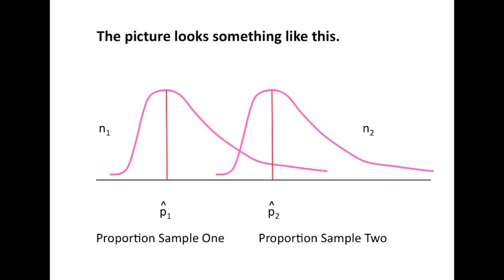Here's a picture of what this might look like. We have our first proportion and the probability of success in it. The second proportion and the probability of success in it. We have a number in our first sample and a number in our second sample. If we have a P hat one, we likewise have a Q hat one. And if we have a P hat two, we likewise have a Q hat two.